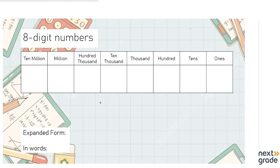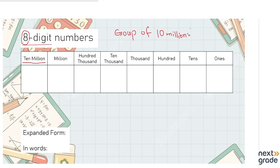Welcome students. In this video we are going to discuss the place value of eight-digit numbers. An eight-digit number has a place called ten million. Ten million comes into being when there is a group of 10 millions — when you have a group of 10 millions, the place value changes and it becomes ten million. We write it in this form.